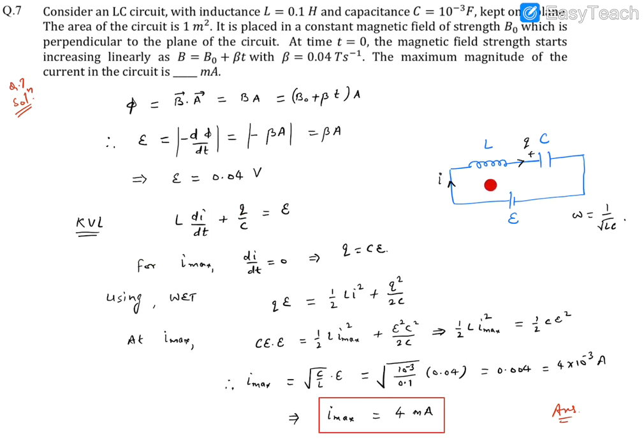If we want I to be max in the circuit, for I max we will find that di/dt will become 0. So at that instant, the charge will be Q = CE. That will be the charge when the current is max.